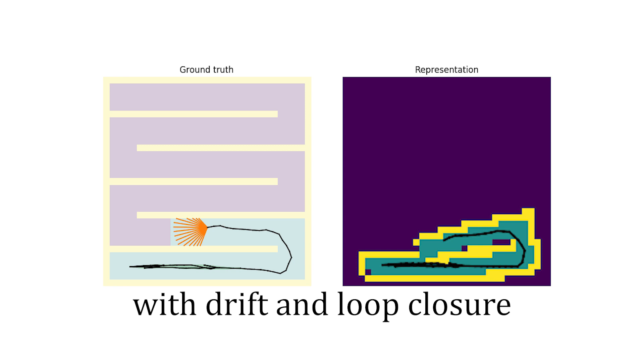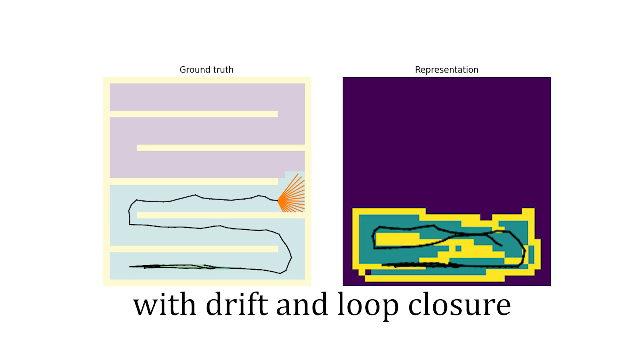Here, we see that the exploration algorithm terminates prematurely, as the estimate is bent out of shape in a way that makes the robot miss the upper part of the maze.